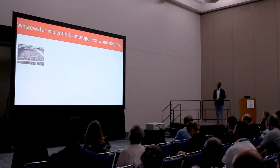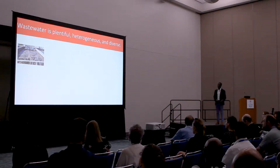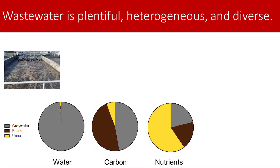Wastewater is also heterogeneous. Most of the time when I say wastewater, people think about flushing the toilet and what happens at the wastewater treatment plant. But wastewater actually contains different waters of different compositions. Gray water, which comes from everywhere in your house or office building except your toilet, contributes the majority of water in domestic wastewater. Feces contributes the majority of the carbon. But urine — which I've studied in maybe more detail than anyone wants to know about — has the majority of nutrients: nitrogen, phosphorus, and potassium. Those same nutrients we use in fertilizers, even though urine is only 1% of wastewater volume.